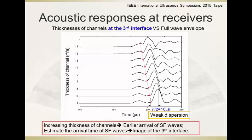Finally, we examine acoustic responses for different channel thicknesses at the third interface. Here are the full-wave envelopes obtained by the Hilbert transform, showing the secondary flexural wave. It arrives earlier as the thickness of the channel at the third interface increases. Using this property, we can roughly estimate the location and thickness of the channel at that interface and obtain an image of the cement annulus.